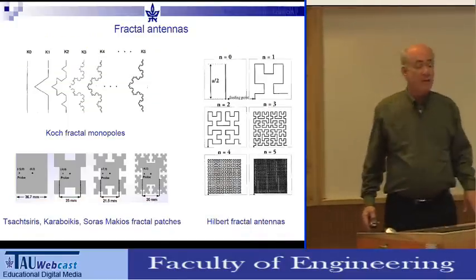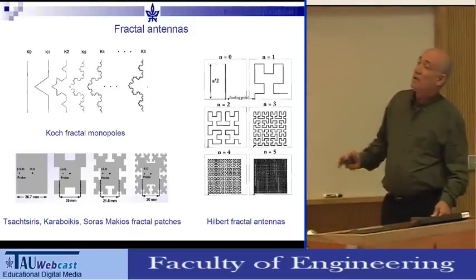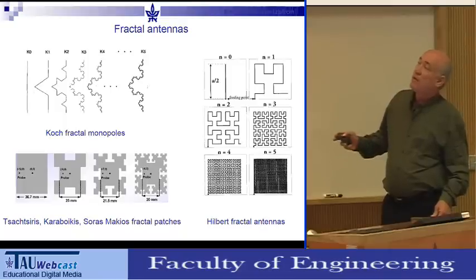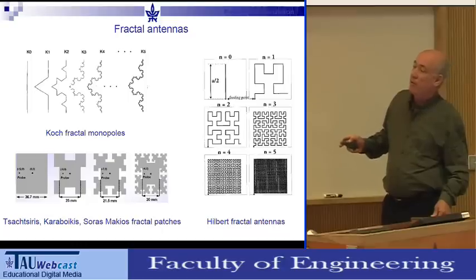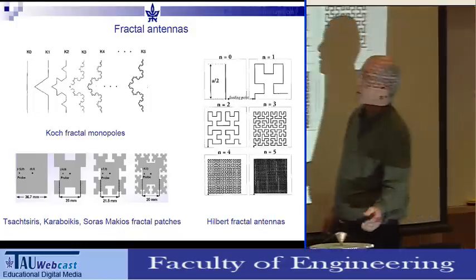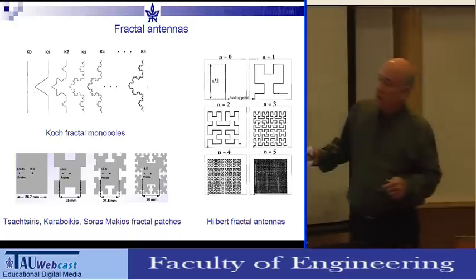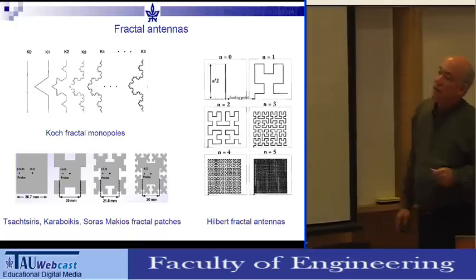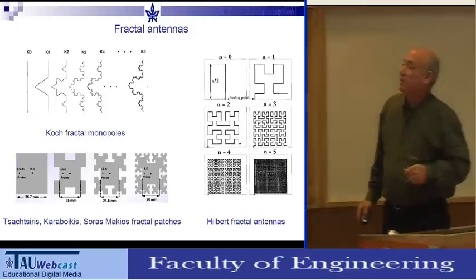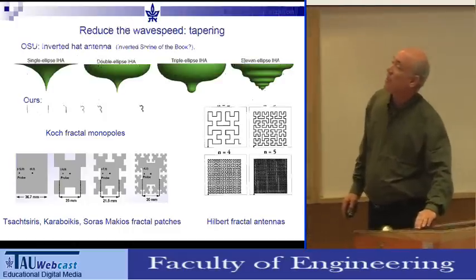Fractal antennas attracted a lot of attention a few years ago. The famous Koch fractal is basically another form of meandering. Space-filling curves like the Hilbert fractal fill from one corner to another. These have been applied to patch antennas too. But in terms of size reduction, they achieve the same order of magnitude as other meandering techniques.